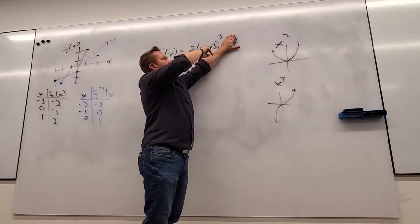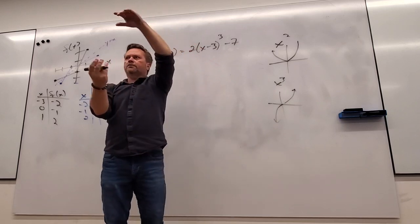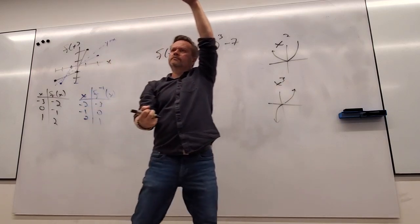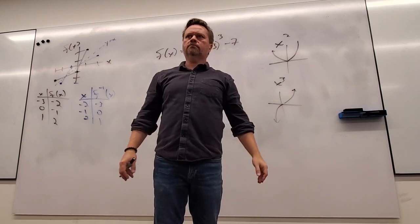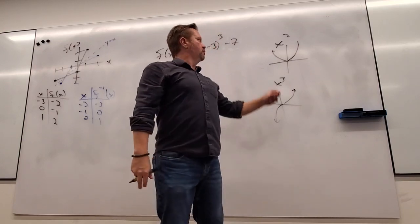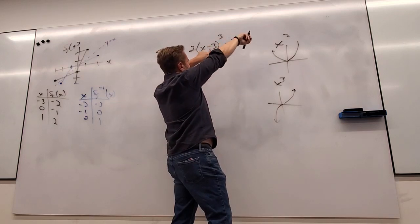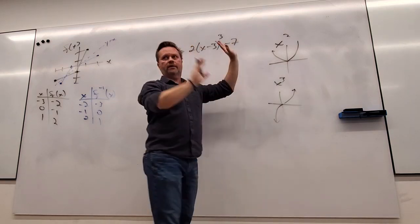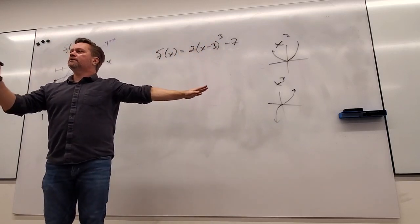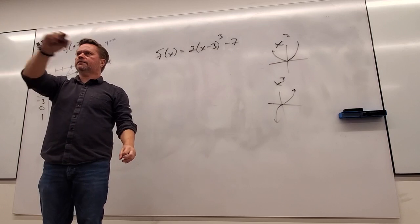So I move every point right three, double the output, and then move it down seven. That's how I would get that — it's the same shape. I know it's going to have an inverse because it passes the horizontal line test. How do I find the inverse? Does anyone remember the steps?